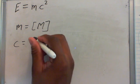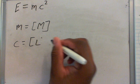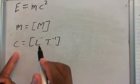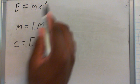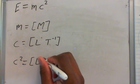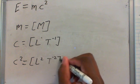And like we showed before, velocity is length over time. But remember there's two, there's two C's, it's because it's C squared. So it would be L squared over T squared.